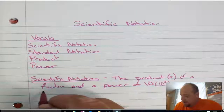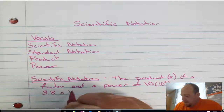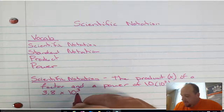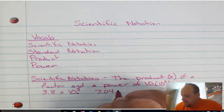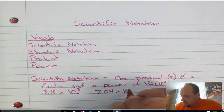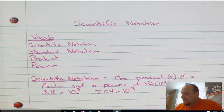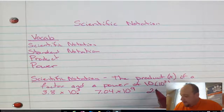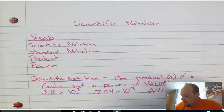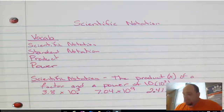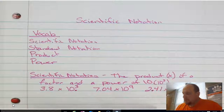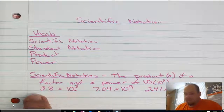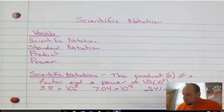So what does that look like? It looks like 3.8 times 10 to the third power. It also might look like 7.04 times 10 to the ninth power. We can even have negative powers or negative exponents, like 2.41 times 10 to the negative fifth power. But notice in every single occurrence, we have a power of 10 — we're always multiplying that factor by a power of 10.